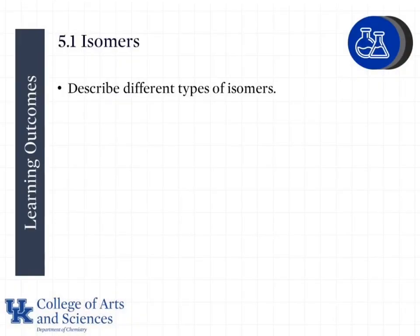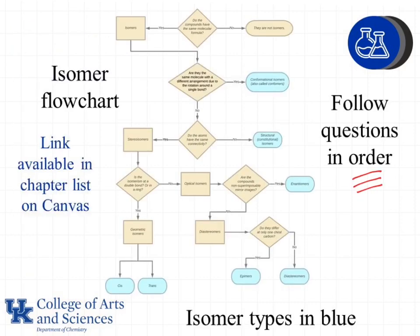In this lesson we're going to look at some different types of isomers. This will be divided into part 1 and part 2. To help you identify the different types of isomers there is a flowchart available, posted in Canvas in the chapter list. You can download this and use it as a reference as you are studying.